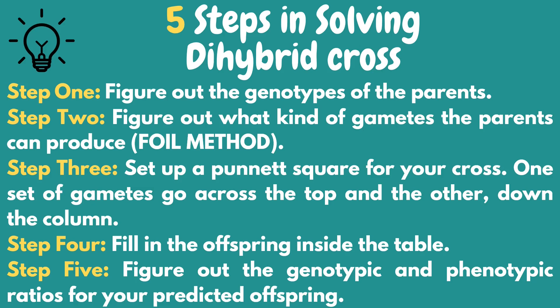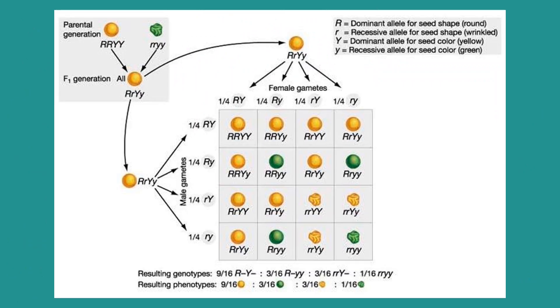Since we already know the steps in solving dihybrid cross, let's look at an example. In this dihybrid cross, there are two traits that we are crossing: shape and color of the seed.